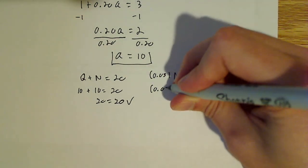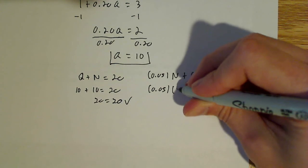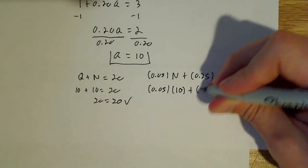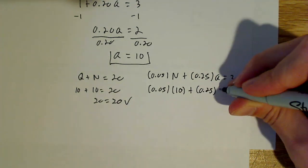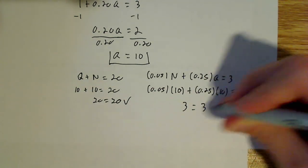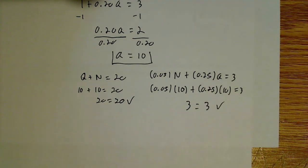I get 0.05 and is 10 and I got 0.25. q is 10 equals 3 and 3 is equal to 3. So it checks out.